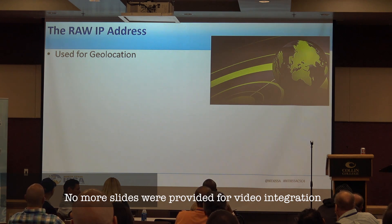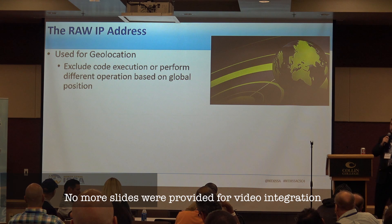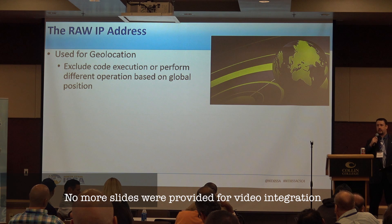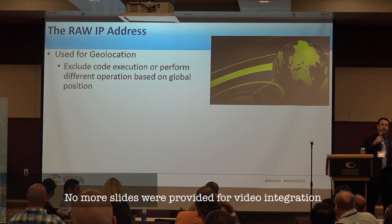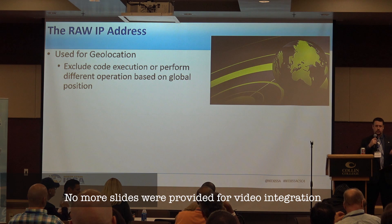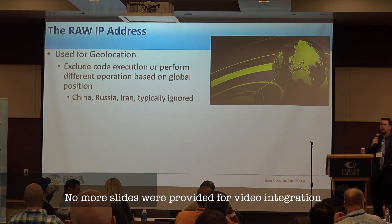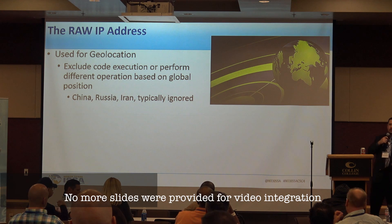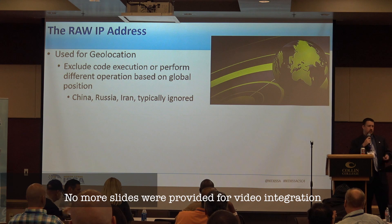The geolocation callback tells the bad guys who you are, and whether or not you're a good target to compromise. For example, APT-prone countries such as Russia or China — if those machines are compromised and the geolocation calls back, they might say 'not this one' and turn it into a clickjacking server or do nothing at all, depending on where the infection occurs.